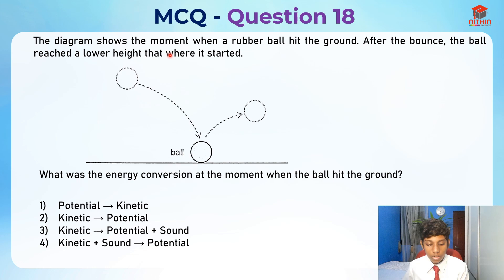The diagram shows the moment when a rubber ball hit the ground. After the bounce, the ball reached a lower height than where it started. What was the energy conversion at the moment when the ball hit the ground? So potential to kinetic, or is it kinetic to potential, or is it kinetic to potential plus sound, kinetic plus sound to potential?